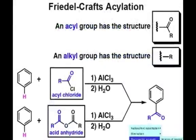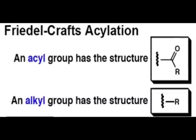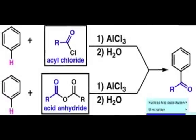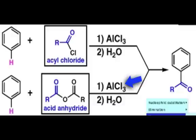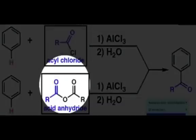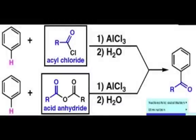The second type of reaction that utilizes a carbon-based electrophile is known as the Friedel-Crafts acylation reaction. As a reminder, the acyl group is a simple carbonyl-based structure. Similar to many of the reactions we've seen previously, the Friedel-Crafts acylation requires a Lewis acid catalyst. Additionally, the starting materials that can be used to acylate the benzene ring can be an acyl chloride or an acid anhydride. In the presence of aluminum trichloride, either of these substrates can successfully acylate an aromatic ring.